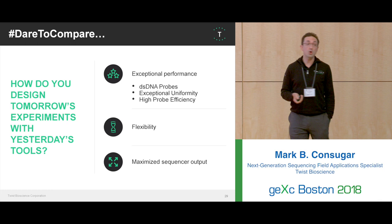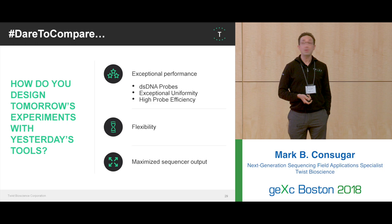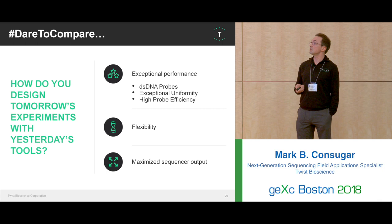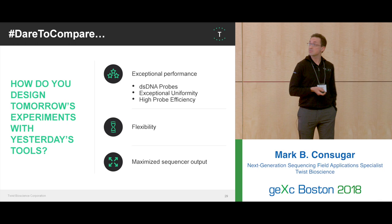To close, our hashtag is: dare to compare. How do you design tomorrow's experiments using yesterday's tools? Consider using today's tools, which is what Twist is here to offer — exceptional performance using double-strand probes with exceptional uniformity and high probe efficiency, flexibility of kits and designs, and maximizing sequencing output to save on both sequencing costs and target enrichment costs.